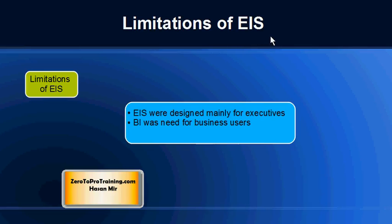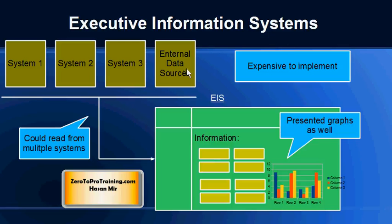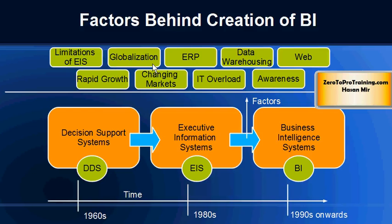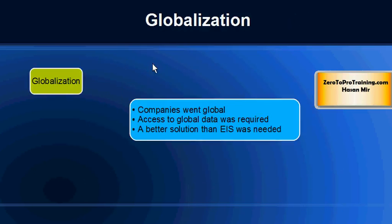The executive information systems were not able to address all the demands of the business — they had their limitations. Although these systems were able to display data from more than one system, they were not something equivalent to a data warehouse. They were not displaying data from all the sources, they were not very affordable, and the main problem was that they were mainly created for managers and executives — they were not a solution for the business users.